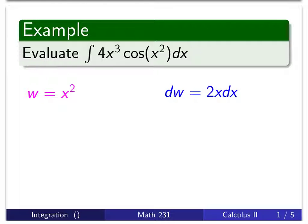So w is x². When I take the derivative of x², I get 2x. Multiply both sides by dx, I get dw is 2x dx. Now ordinarily, I might panic at this point because 2x dx does not match the 4x³ over here that I have.